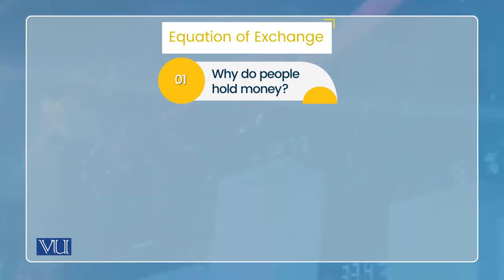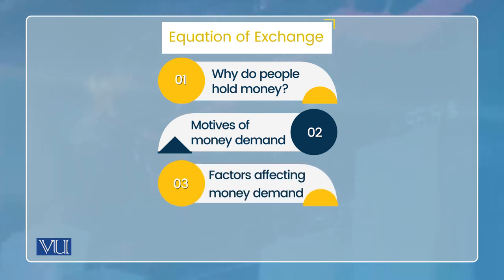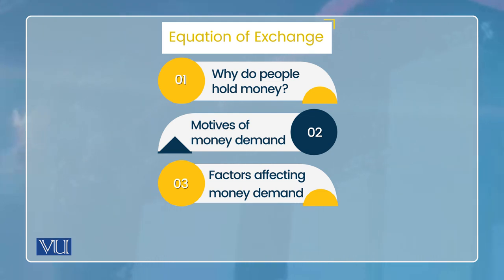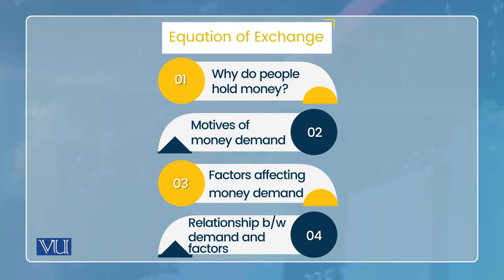Money demand theory کا role یہ ہے کہ وہ سب سے پہلے یہ بتاتی ہے کہ why do people hold money — یعنی money demand کے motives کیا ہیں۔ اور دوسرا important issue جو money demand theory میں discuss ہوتا ہے وہ ہے factors affecting money demand — یعنی different variables اور factors جو money demand کو effect کر سکتے ہیں اور ان factors اور money demand کے درمیان relationship کس nature کا ہے، یہ money demand theory سے پتہ چلتا ہے۔